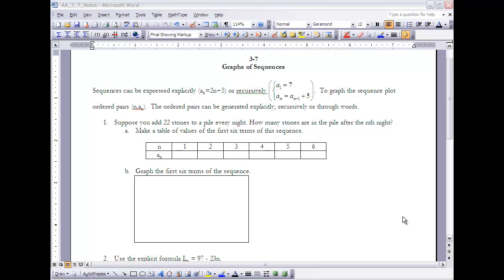Okay, this is the notes for section 3.7, Graphs of Sequences. If you haven't done so already, make sure you read section 3.7 before going on with these notes. First of all, sequences can be expressed explicitly, something like a_n = 2n + 5, or recursively like we talked about in the last section: a_1 = 7, a_n = a_(n-1) + 5.